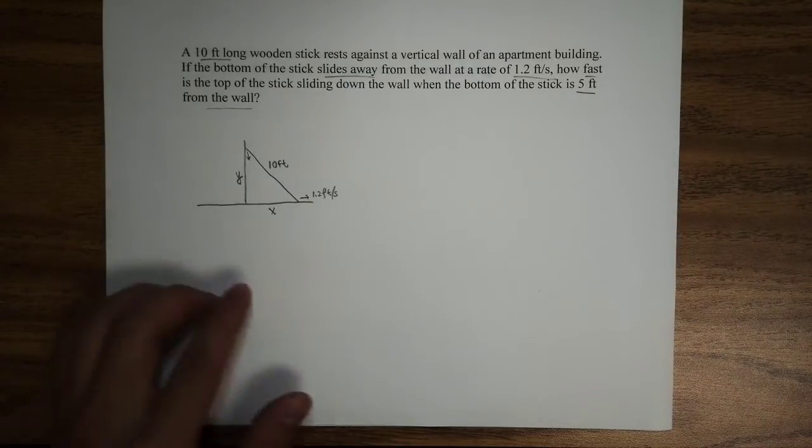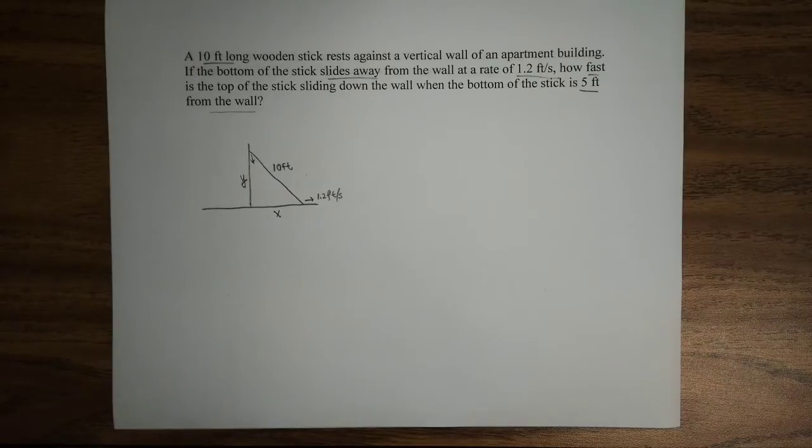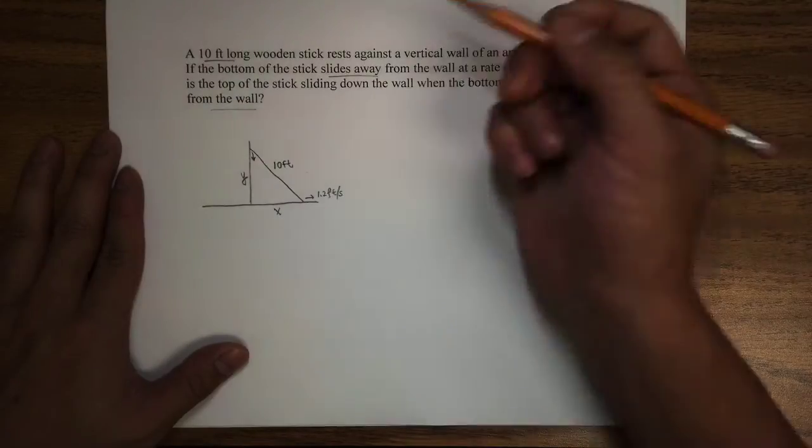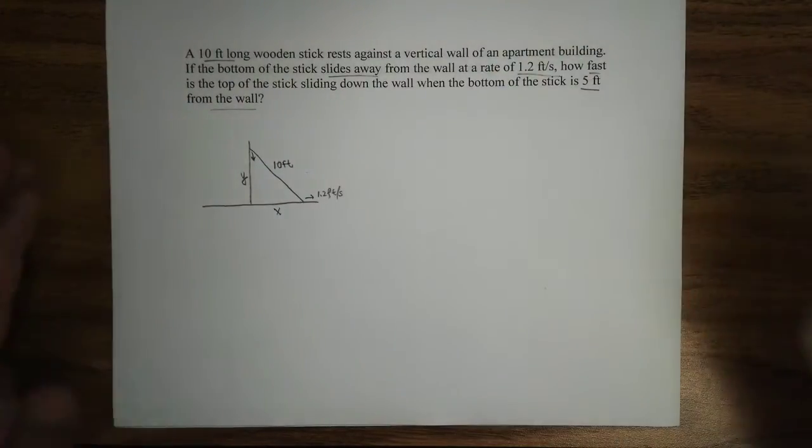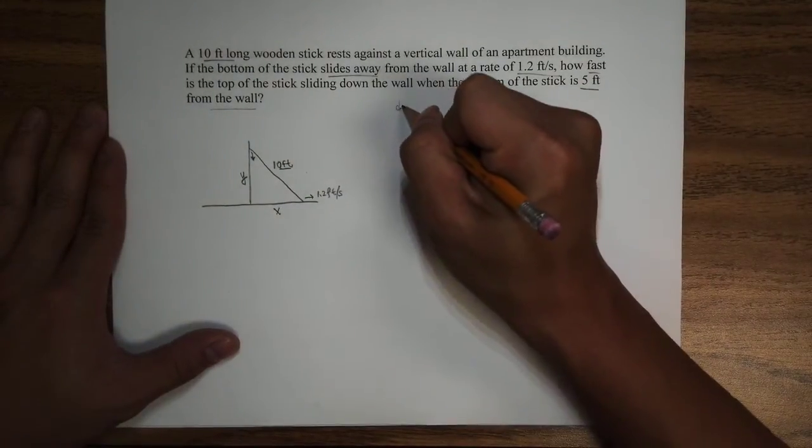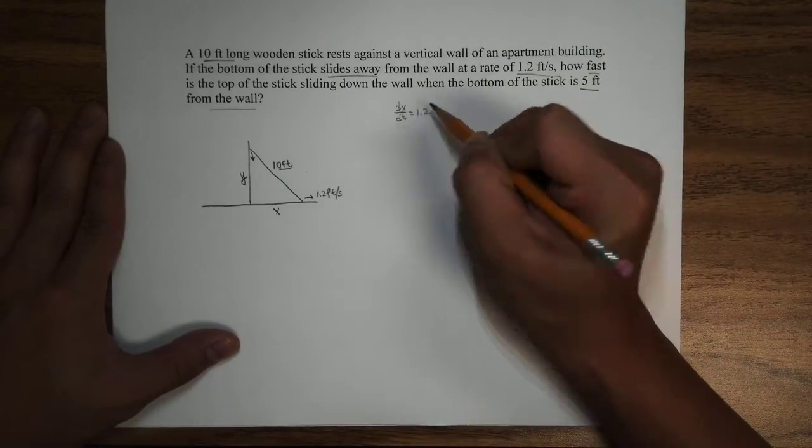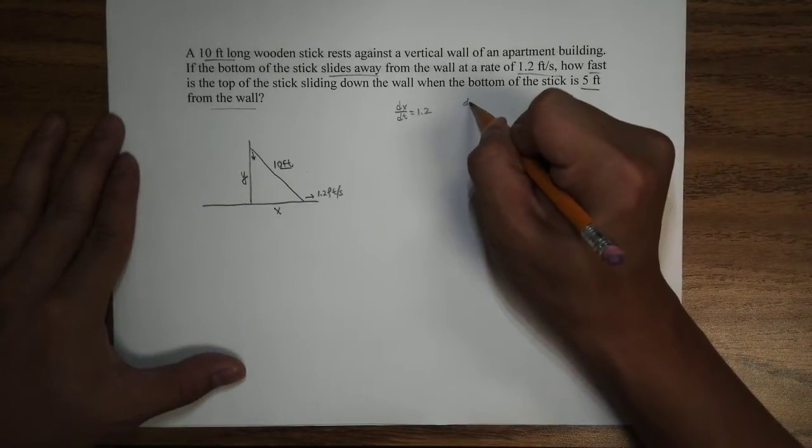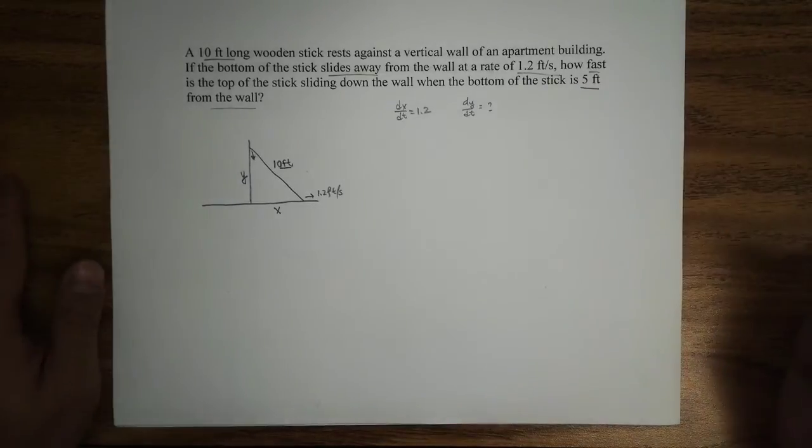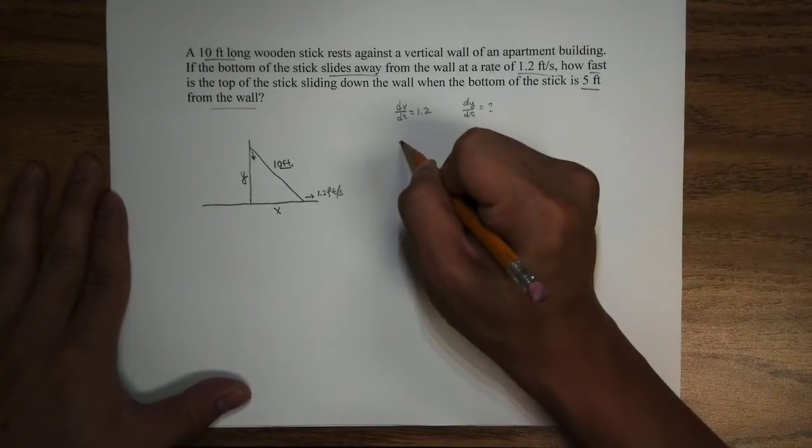And since it's going to change, we are going to put a letter instead of a constant number right here. And we would like to find out the rate it drops. So basically, let's see what it's given. We know this is 10 feet, and we know that dx/dt, the change of X over time, is 1.2 feet per second. And what we're trying to find out is dy/dt. We don't know that, dy/dt. And we are going to find the dy/dt when X is equal to 5.